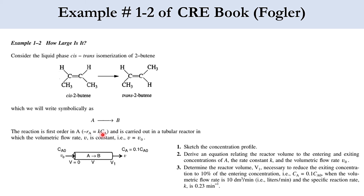At V = 0 (the inlet), the concentration of A is CA0 and the volumetric flow rate is V0. At the reactor exit, volume V1, the concentration is 0.1·CA0 — meaning if the initial concentration is 10, the final is 1. Importantly, the volumetric flow rate V is constant and equal to V0 throughout the process.